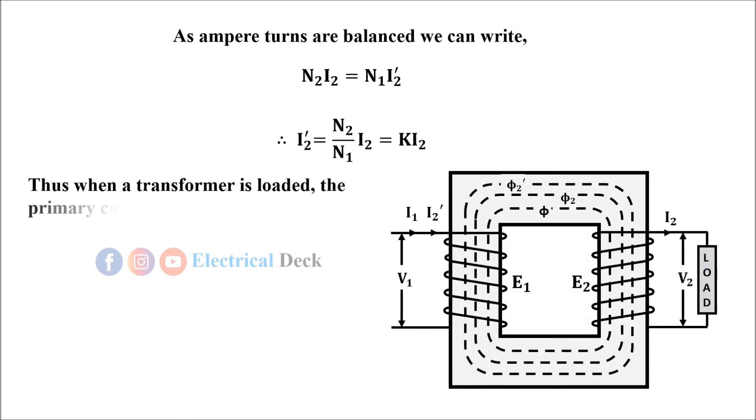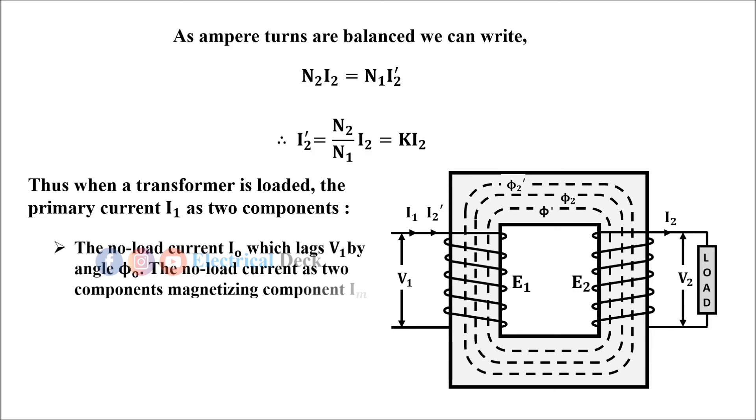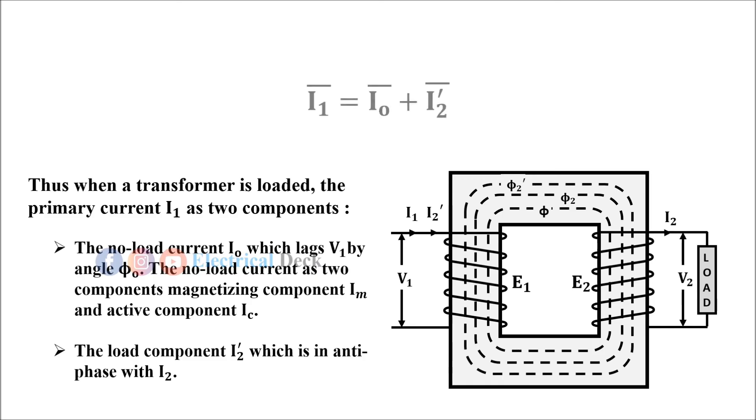Thus when a transformer is loaded, the primary current I₁ has two components: the no load current I₀ which lags V₁ by an angle φ₀, with magnetizing component Im and active component Ic; and the load component I₂' which is in antiphase with I₂. Hence the primary current I₁ is the vector sum of I₀ and I₂'.